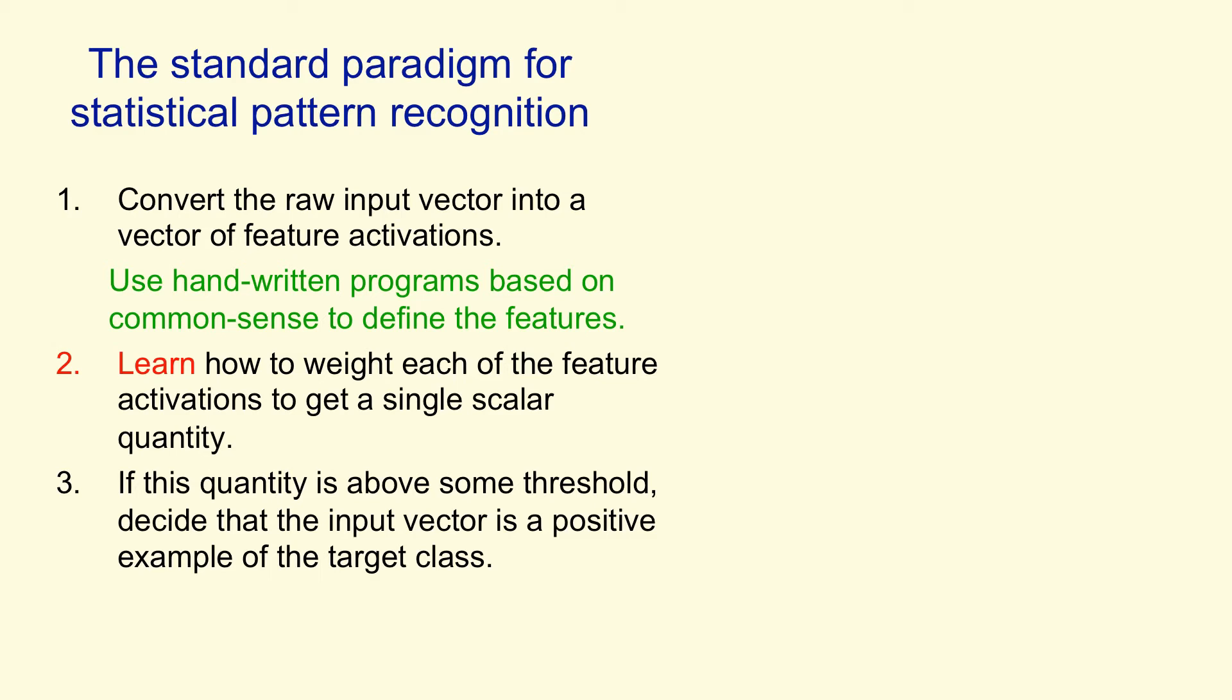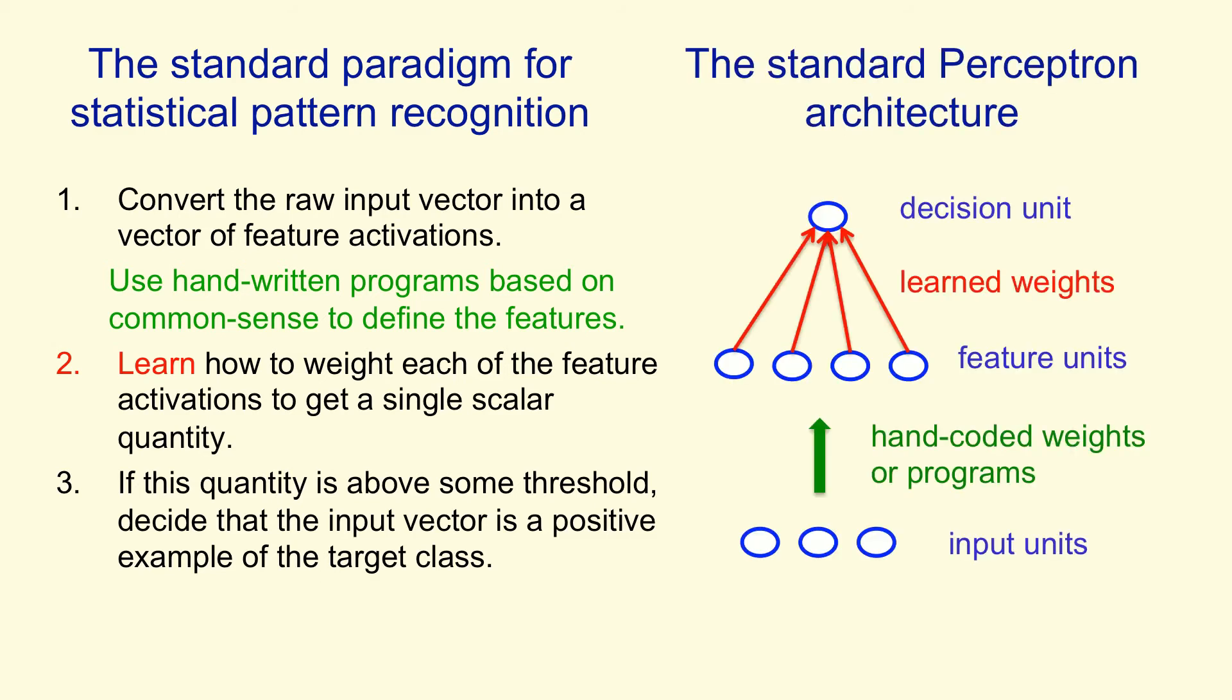A perceptron is a particular example of a statistical pattern recognition system. There were actually many different kinds of perceptron, but the standard kind, which Rosenblatt called an alpha perceptron, consists of some inputs which are then converted into feature activities. They might be converted by things that look a bit like neurons, but that stage of the system does not learn.